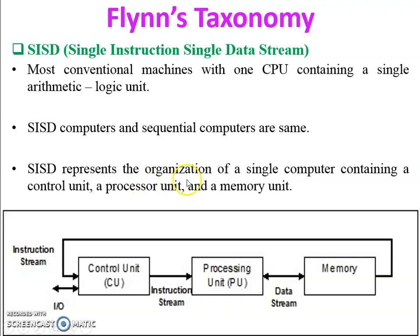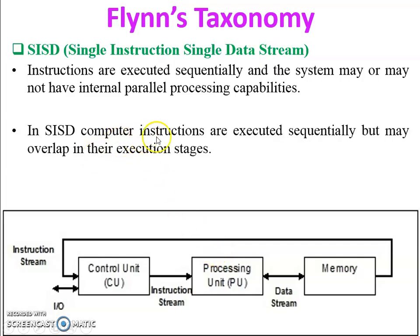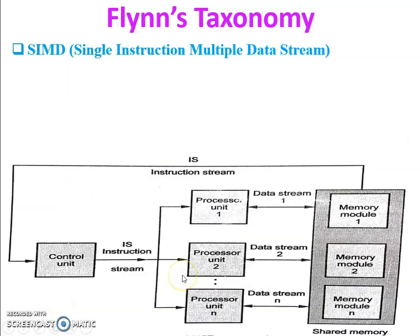SISD represents the organization of a single computer containing a control unit, a processor unit, and a memory unit. Instructions are executed sequentially because program instructions are stored in memory one by one. The system may or may not have internal parallel processing capabilities. In the figure you can see only sequential processing capabilities, so there is no parallel processing available inside SISD. In SISD, instructions are executed sequentially but may overlap in their execution stages.